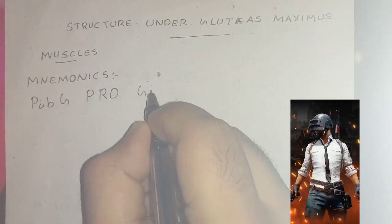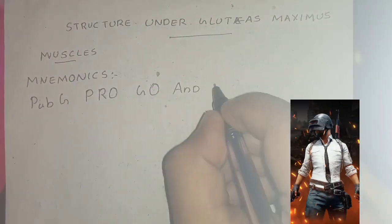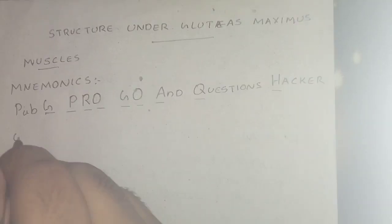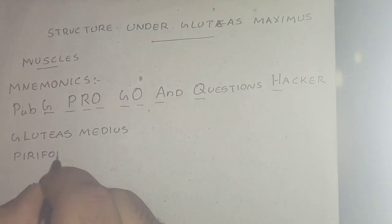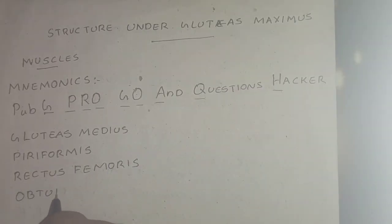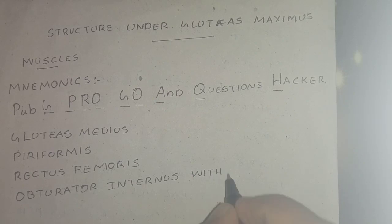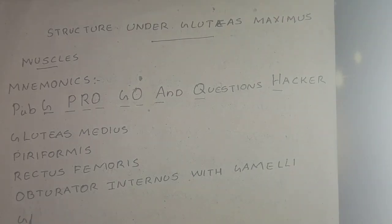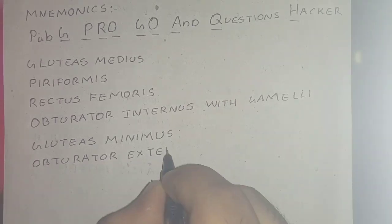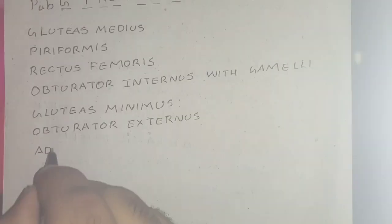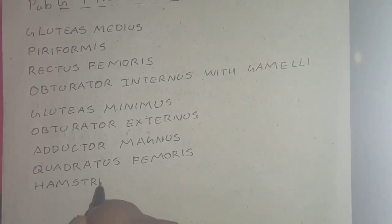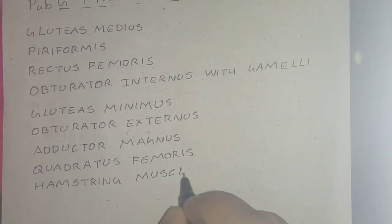The mnemonic is PUBG - Pro Go and Questions Hackers. G stands for gluteus medius, P for piriformis, R for rectus femoris, O for obturator internus, G for gluteus minimus, O for obturator externus, A for adductor magnus, Q for quadratus femoris, and H for the hamstring muscles. Thus we can remember the muscles.